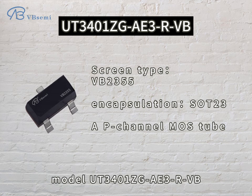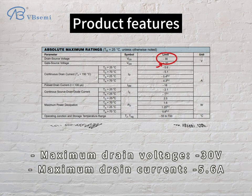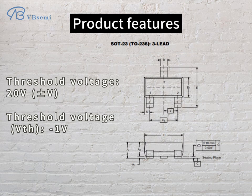Model UT3401 ZGAE32VB. Product features: maximum drain voltage -30V, maximum drain current 5.6A, threshold voltage VTH -1V.